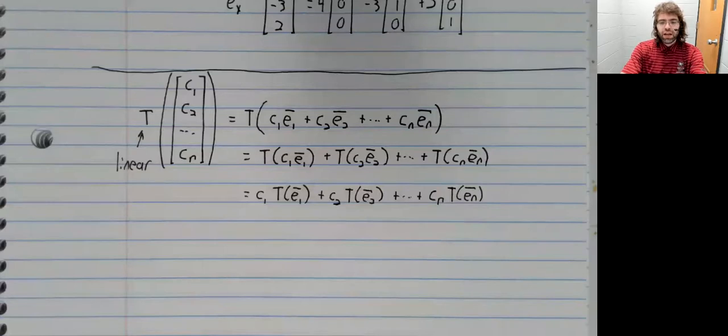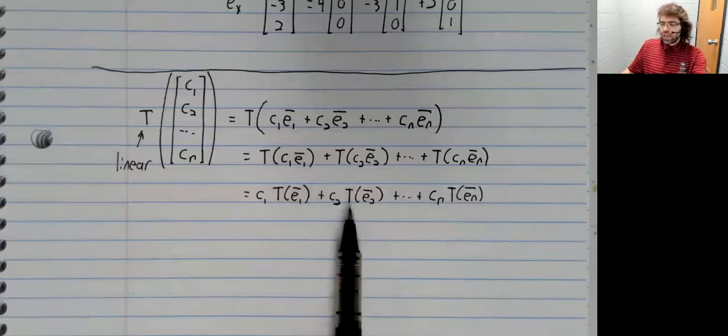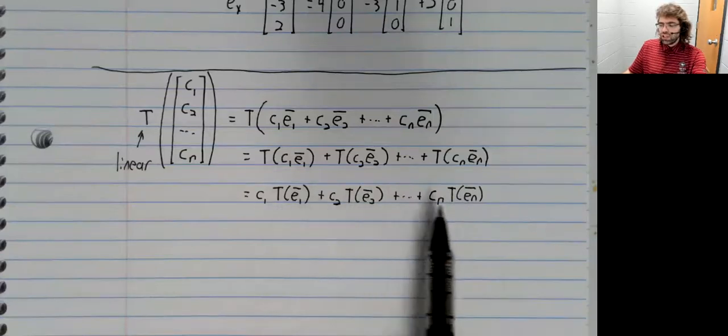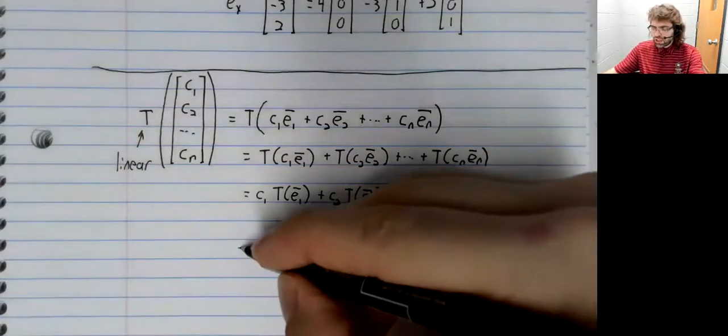We've seen that vector equations and matrix equations are the same thing. We can rewrite this linear combination as